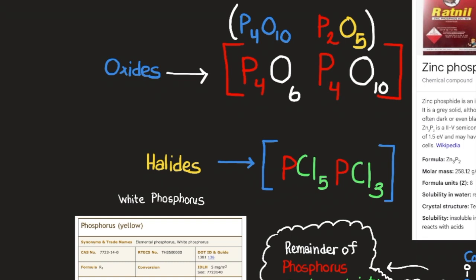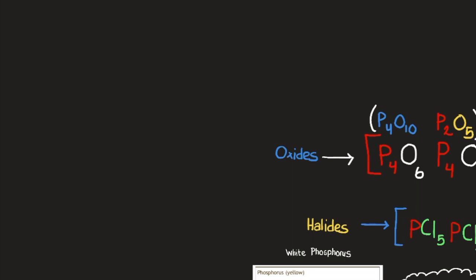P2O5, P4O10 — these are just examples of the oxides that form with phosphorus. Other such compounds are things such as phosphates. Phosphates are presented as one phosphorus bound to four other oxygens.